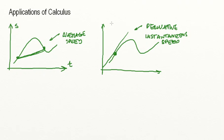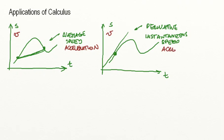The same thing would happen if we had, instead of a displacement-time graph, a velocity-time graph. Then instead of an average speed, we would have an average acceleration. And also on this second graph, if I was getting the tangent — the derivative — it would not be the instantaneous speed; if this was a velocity-time graph, it would be an instantaneous acceleration.